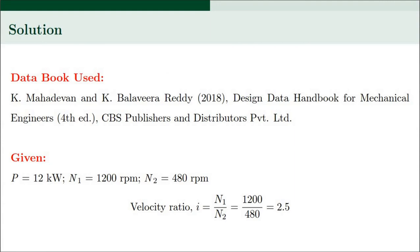The data book used for this numerical example is prepared by Mahadevan and Reddy, published by CBS Publishers and Distributors Private Limited. The given data are: power to be transmitted P is 12 kilowatts, speed of the driving sprocket N1 is 1200 rpm, and speed of the driven sprocket N2 is 480 rpm.